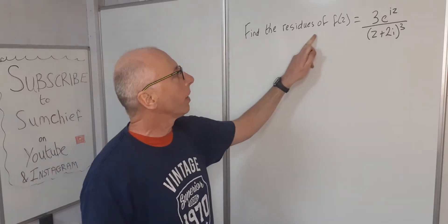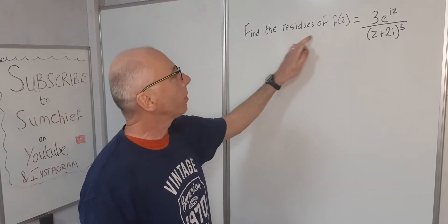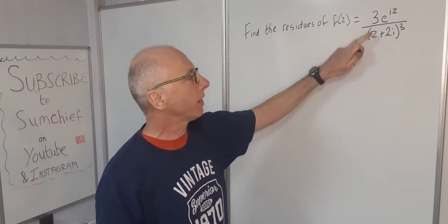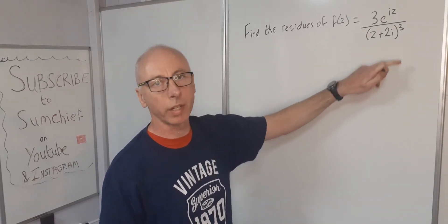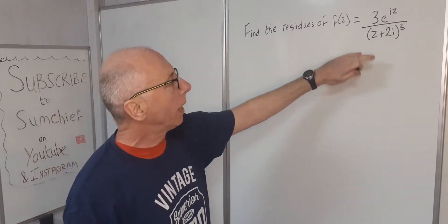In this video we're going to find the residue of this function: 3e^(iz) over (z + 2i)^3. So how are we going to go about this?